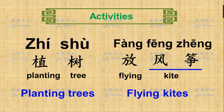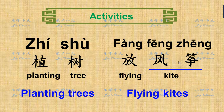Other activities you can do include planting trees — 植树, where 植 is the verb 'plant' and 树 means tree. Another activity is flying kites — 放风筝, where 放 means fly or release, and 风筝 means kite.